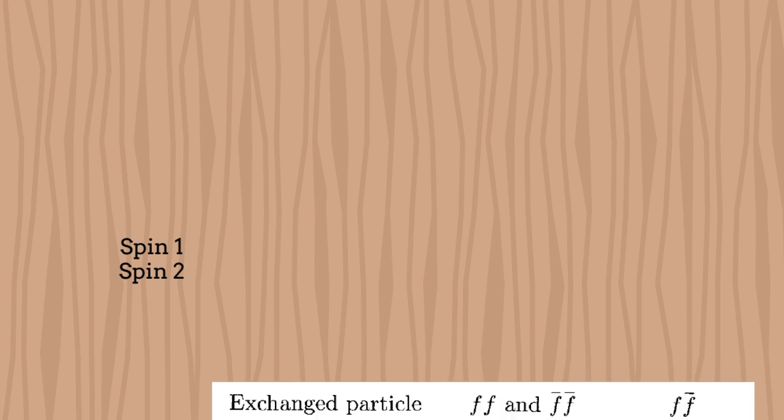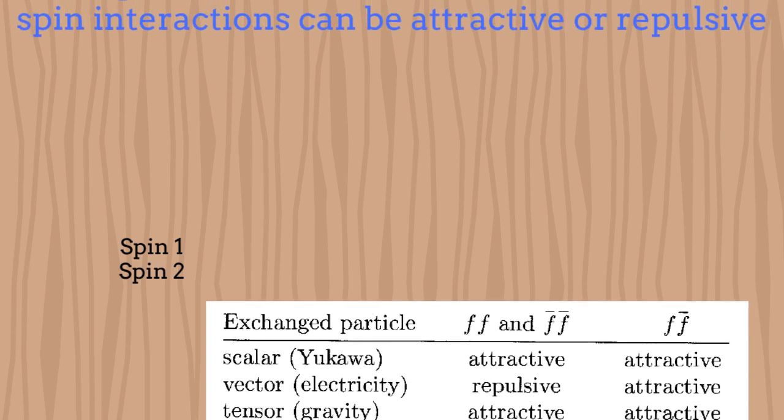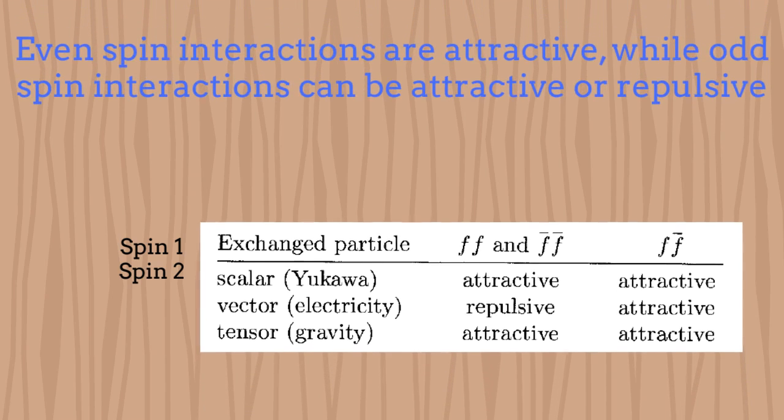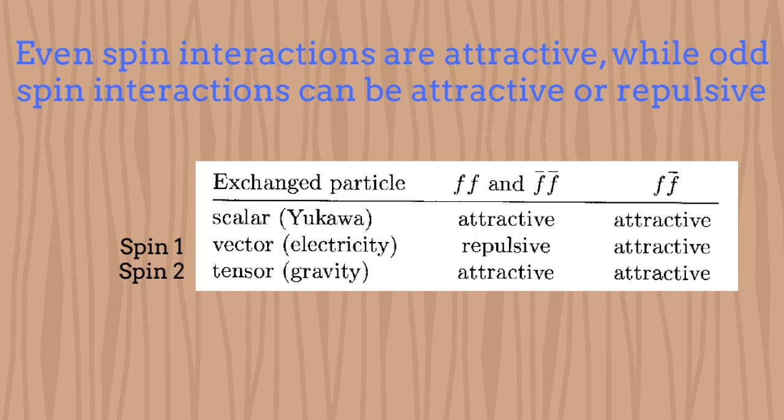The standard quantum field theory suggests that the graviton, being a spin-two particle, generates an attractive effect. In fact, purely attractive interactions have even spins. Then spin-0 and spin-2 are both attractive. In this sense, a scalar field would also generate an attractive effect.